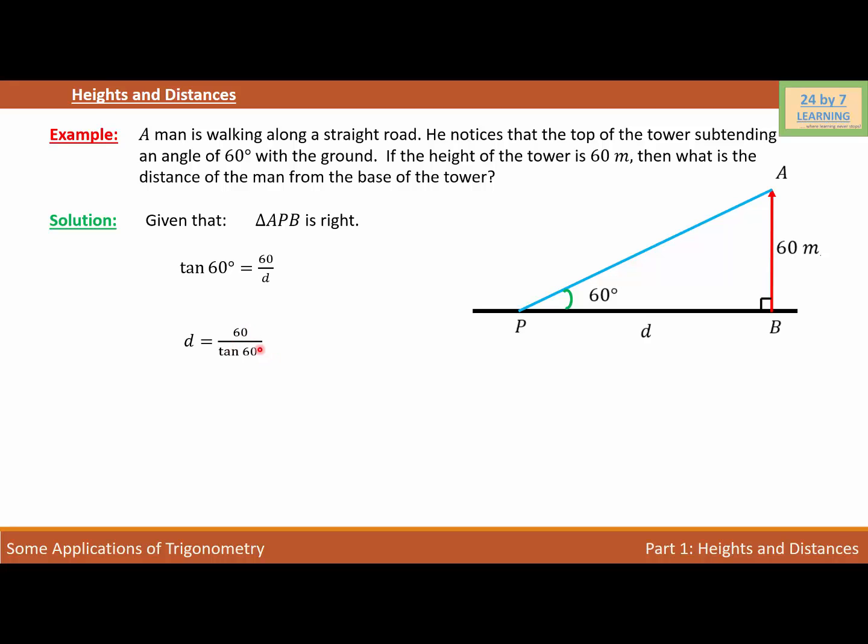Let's substitute the value of tangent 60. D equals 60 over square root of 3 because tangent 60 is square root of 3. If I simplify this further, I get D equals 34.6 meters, which means the distance between the base of the tower and the man is 34.6 meters.